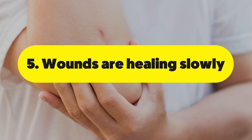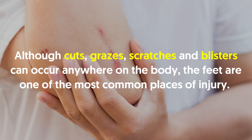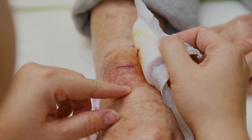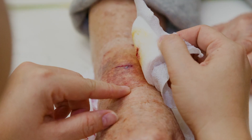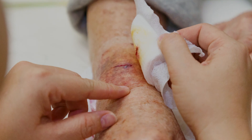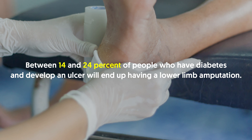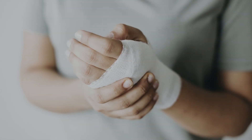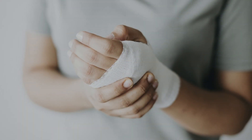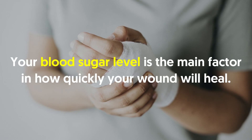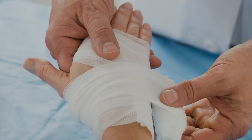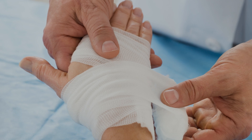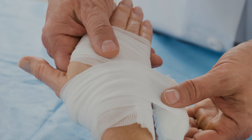Number five: wounds are healing slowly. Although cuts, grazes, scratches, and blisters can occur anywhere, the feet are one of the most common places of injury. A small wound on the foot can quickly develop into a foot ulcer. Between 14 and 24 percent of people who have diabetes and develop an ulcer will end up having a lower limb amputation. Your blood sugar level is the main factor in how quickly a wound heals — high blood sugar prevents nutrients and oxygen from energizing cells and increases inflammation.